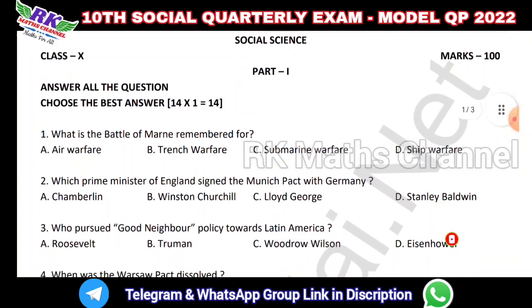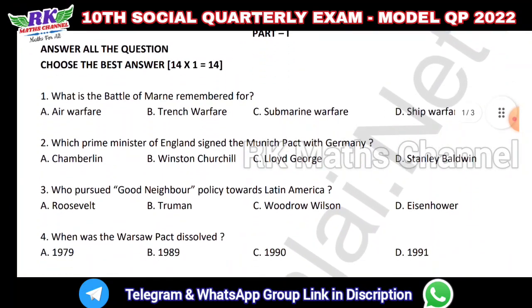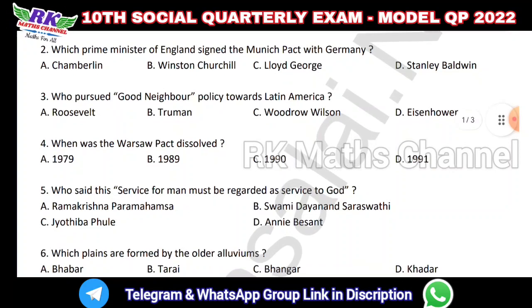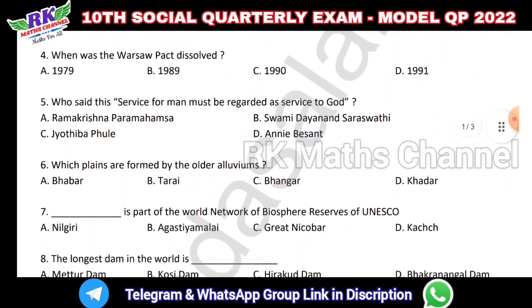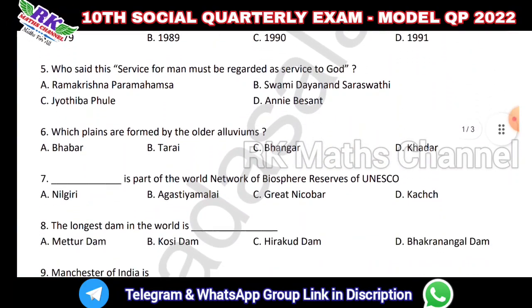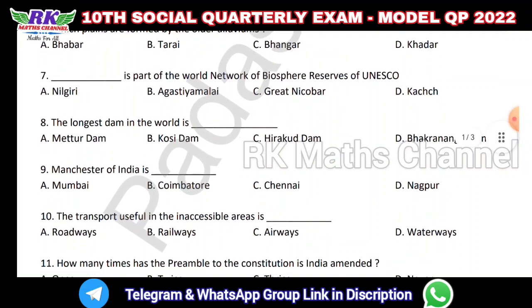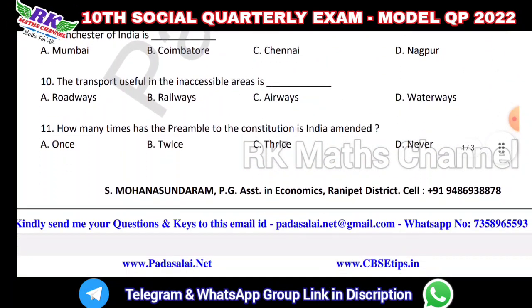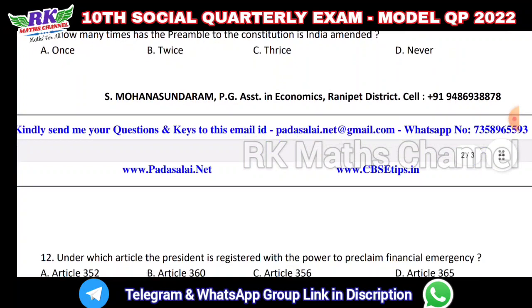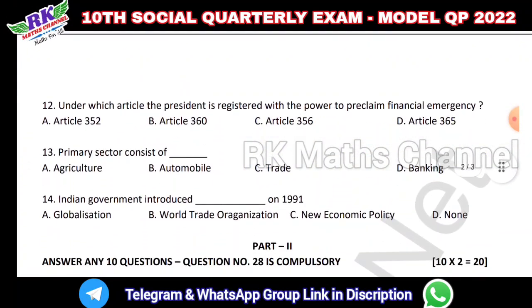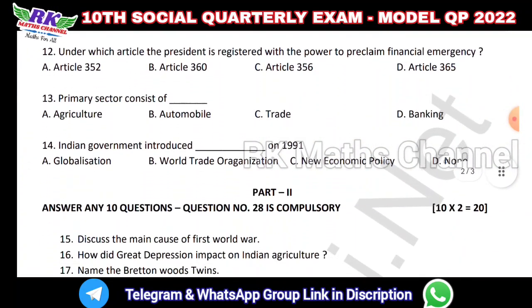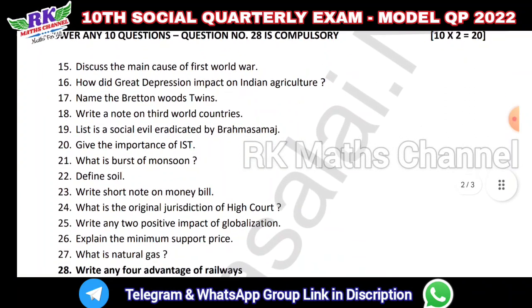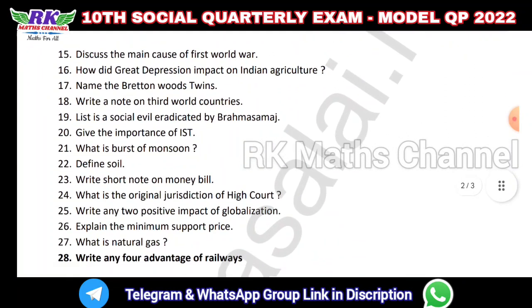The question paper link is in the description. The first section is Part 1 with 14 one-mark questions. In the one-mark section, mostly repeated questions will come. For Part 2, there are two-mark questions - 10 questions total, and question number 28 is the compulsory question.